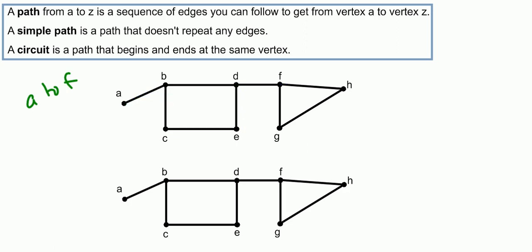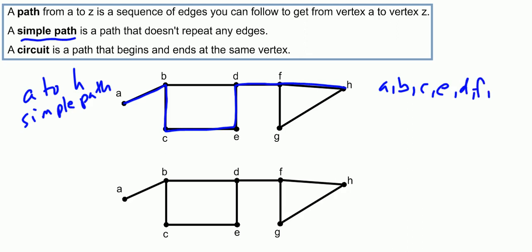Oftentimes in graph theory, we have the idea of a simple path. And a simple path is a path that doesn't repeat any edges. So if we wanted to make a path from A to H that was a simple path, we could go this way. That's just one of many simple paths from A to H. We could go A, B, C, E, D, F, H.